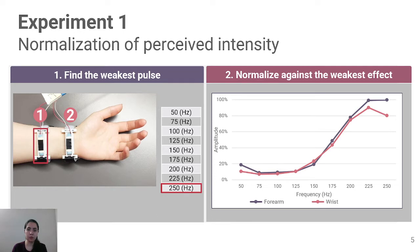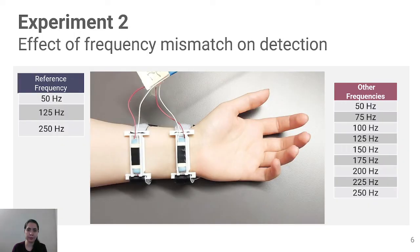The goal of the second experiment was to determine the effect of frequency mismatch on the detection of apparent tactile motion. We normalized the perceived intensity at all frequencies and locations based on the result of the previous experiment.